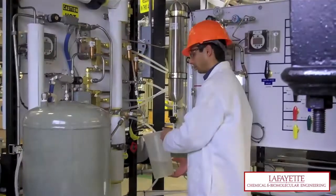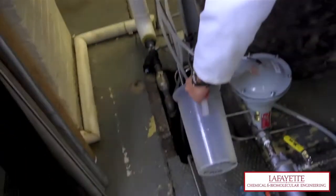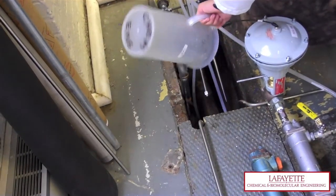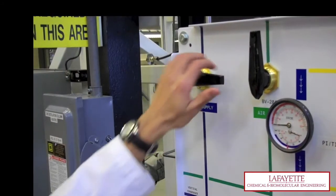Close BV125 and empty the container into the drain behind the kettle reboiler. Ensure that BV125 is closed before opening BV203.